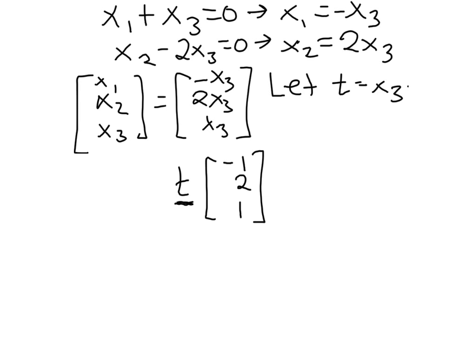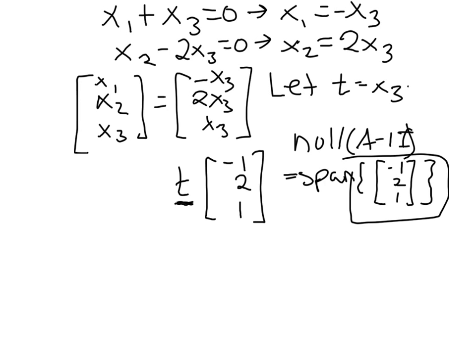So what we've described here is the solution set actually has a span. The null space of this A minus 1 times I matrix is actually equal to the span of this one vector, negative 1, 2, 1. And so this right here is a basis for the eigenspace corresponding to lambda equals 1, which we write as E subscript 1.